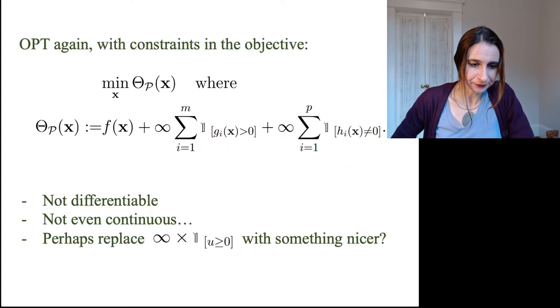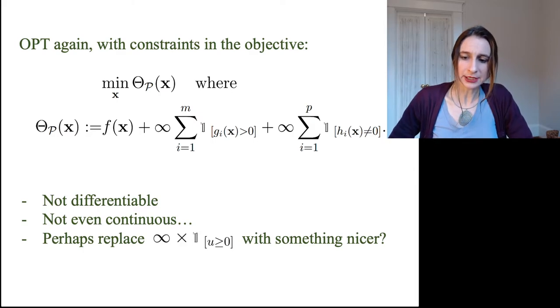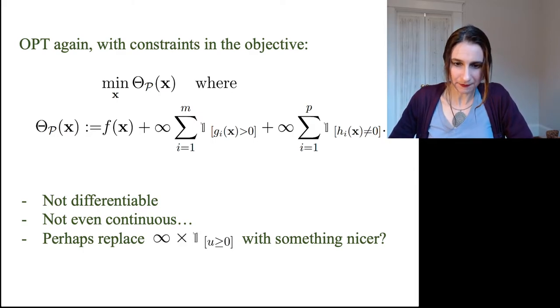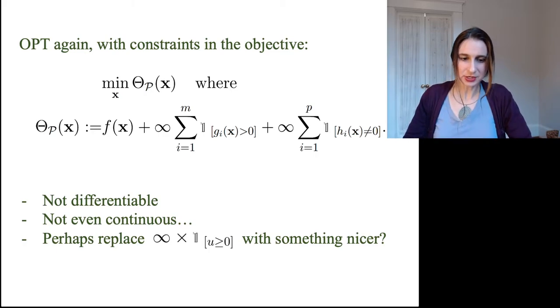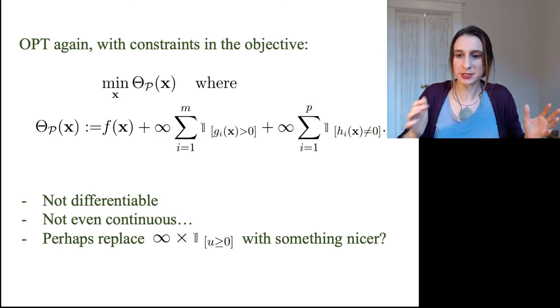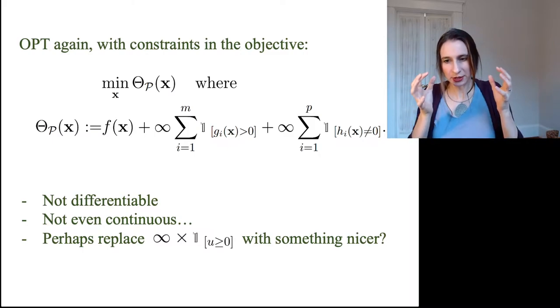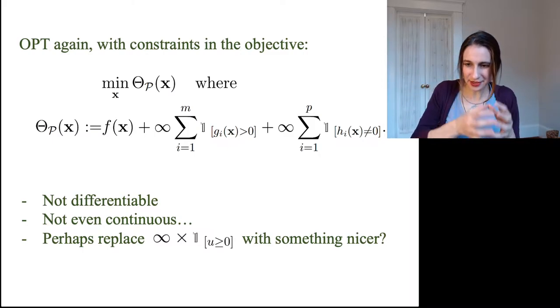All right, so I'm going to rewrite the OPT problem, but this time I'm going to put the constraints in the objective, okay? So it's going to be an equivalent optimization problem. It's just that the constraints are actually inside the objective.